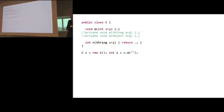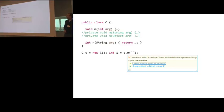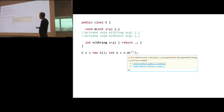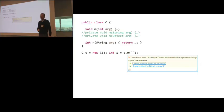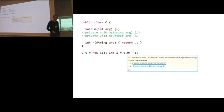Have a short guess. Well, it says that the method call is not applicable for the argument string, which is correct. And it suggests two fixes: one is to change the method signature up here to a string argument, and the other is to create a new method of type string. So I've got one here already, and I will use this.